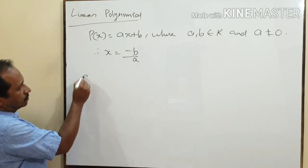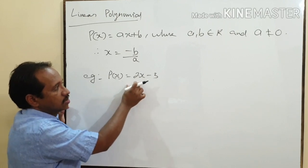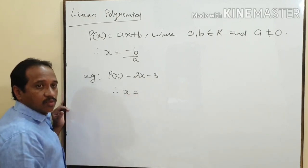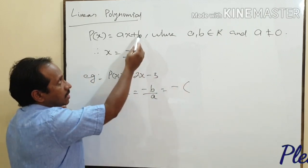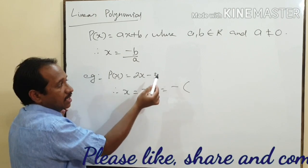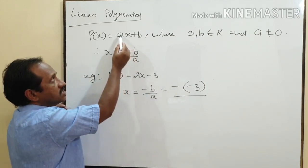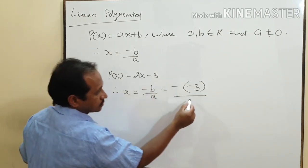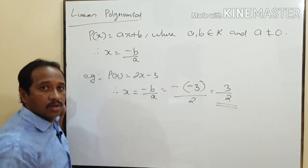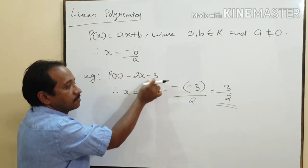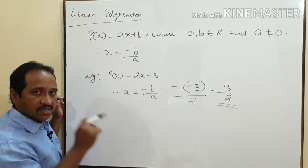Let us consider an example. Here the polynomial is p(x) = 2x − 3. Therefore x = -b/a. Comparing to the standard form, b is the constant term, which here is -3, and a is the coefficient of x, which is 2. So x = -(-3)/2 = 3/2. This is the only zero or root of the linear polynomial 2x − 3. If you substitute x = 3/2 in this polynomial the value will become zero — let us check that also.